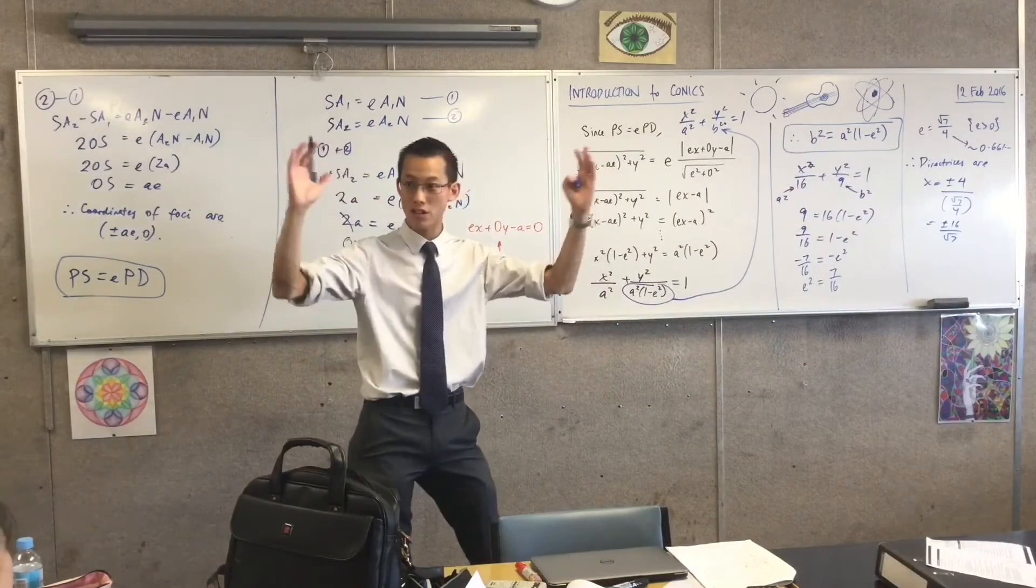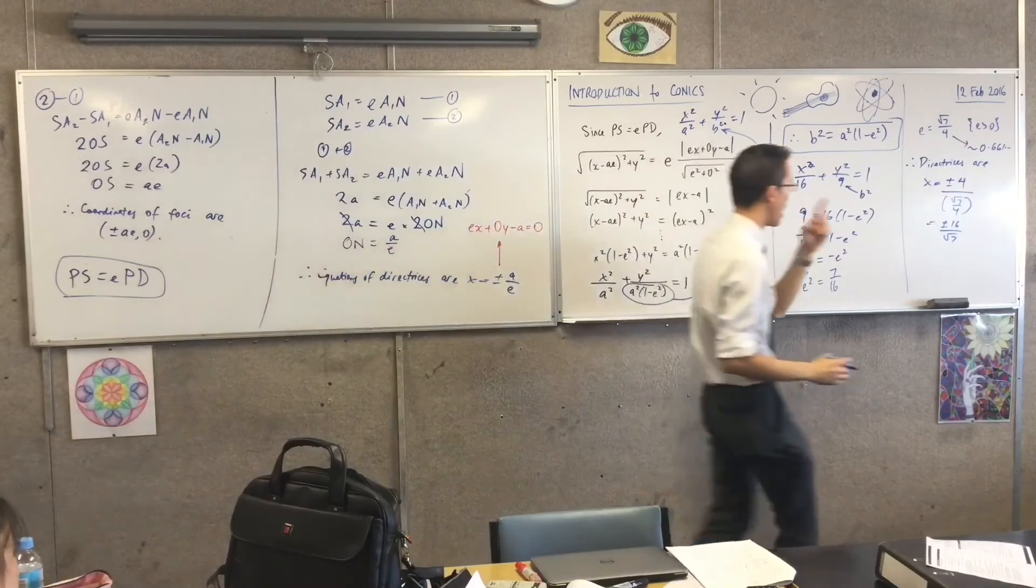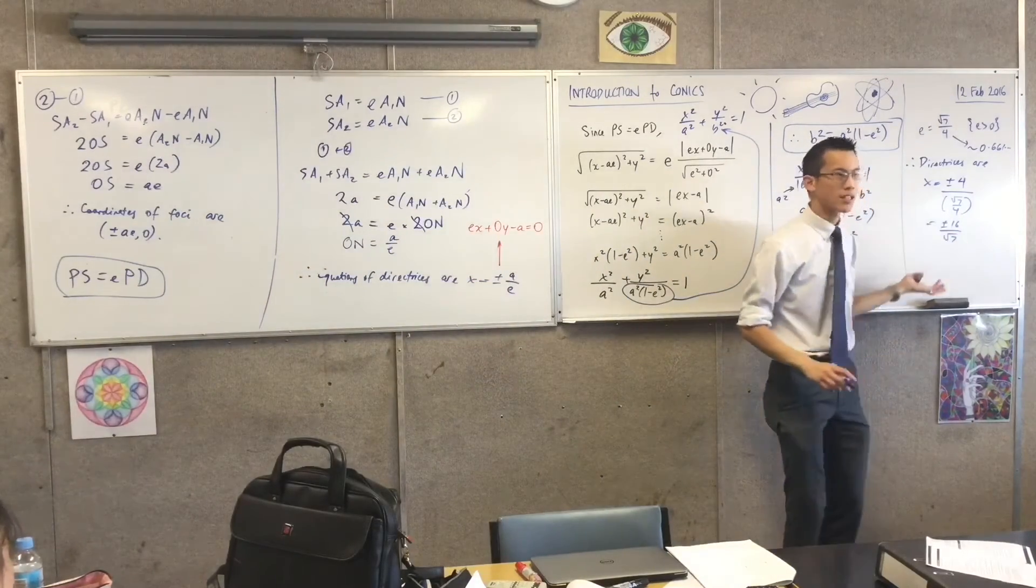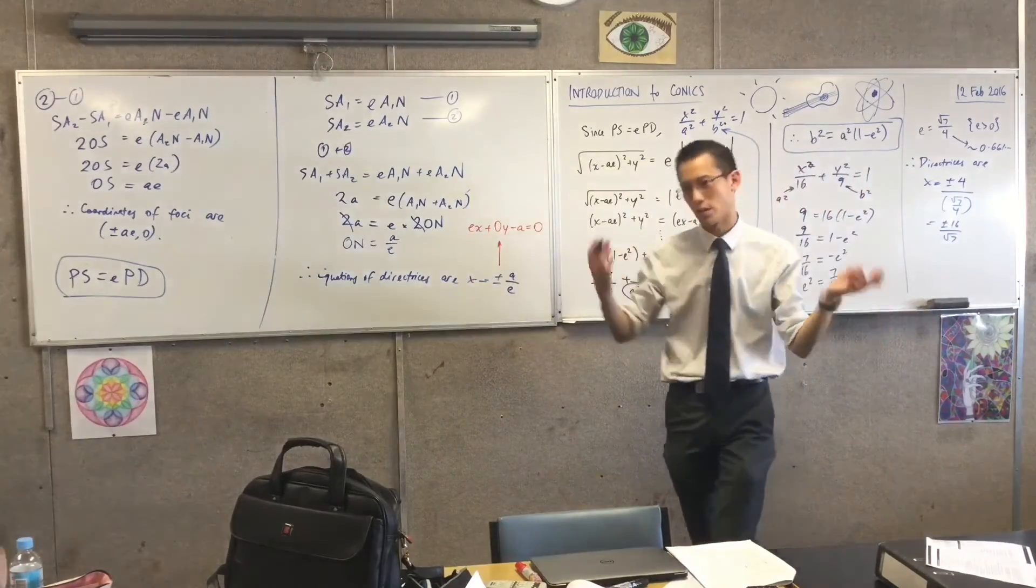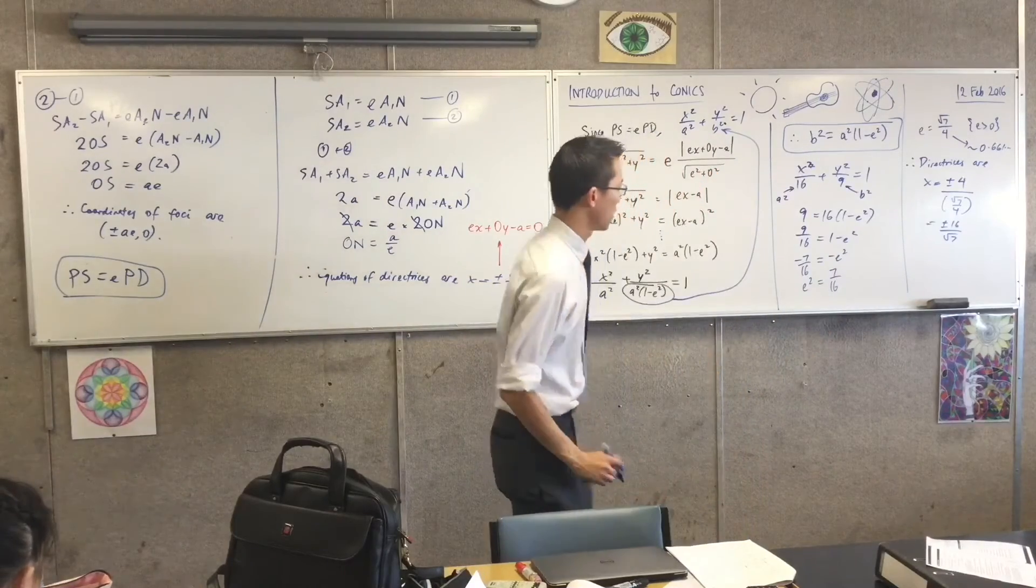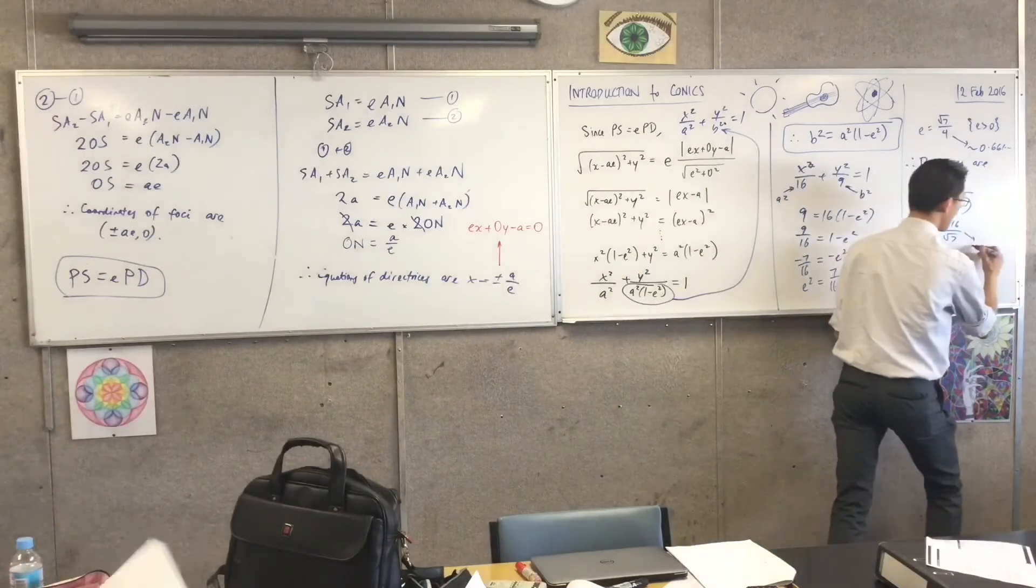Those are the two equations that I'm after. Now just double check. Calculator again, what is 16 on root 7? Just give me the positive one. Obviously the negative one, same magnitude. What is it?